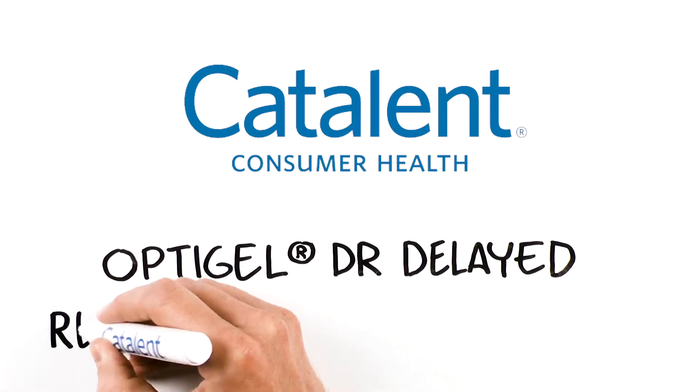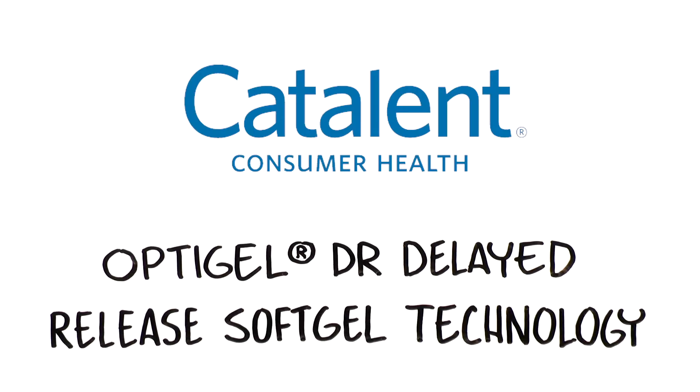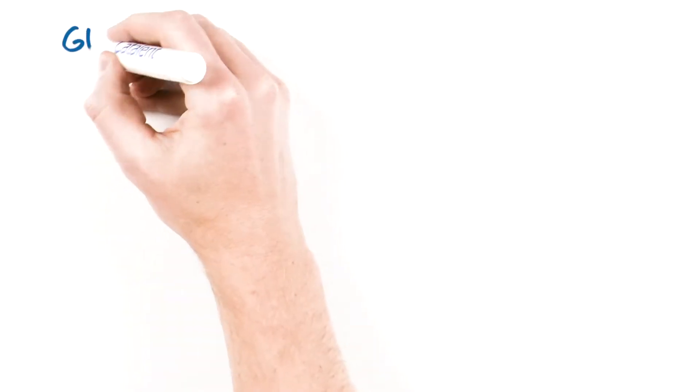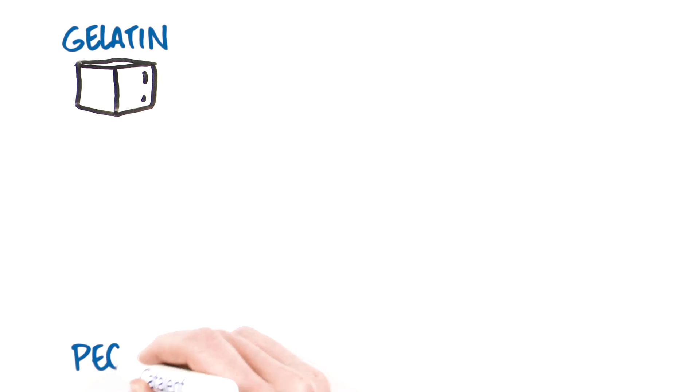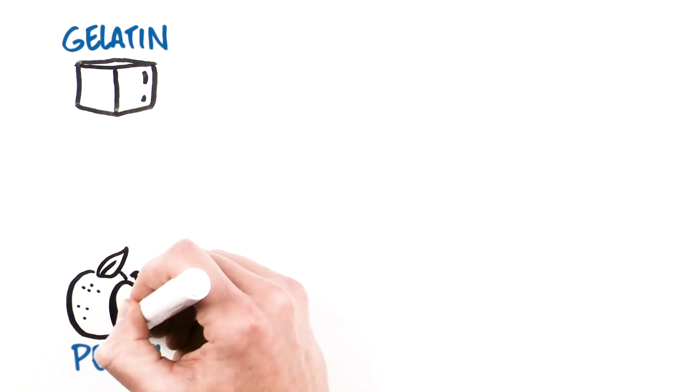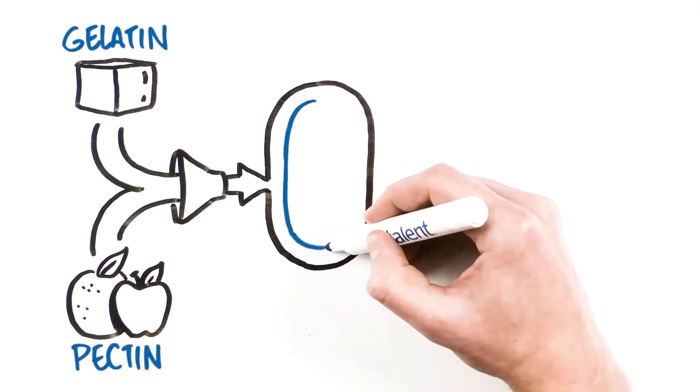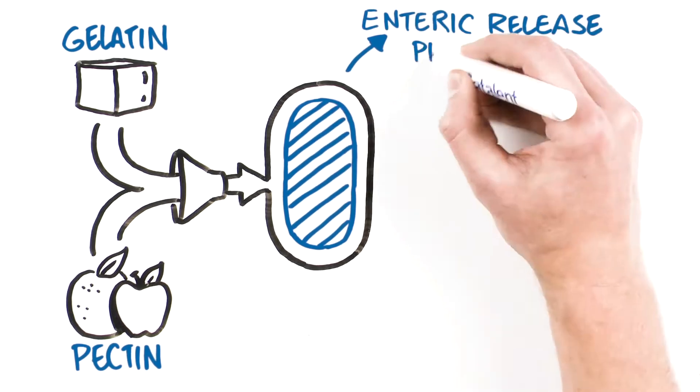OptiGel DR delayed release soft gel technology. OptiGel DR is a unique technology that combines gelatin with the naturally derived polymer pectin to produce a soft gel capsule with an enteric release profile.